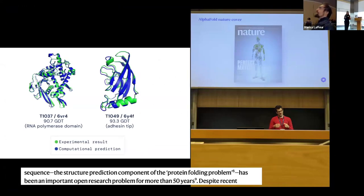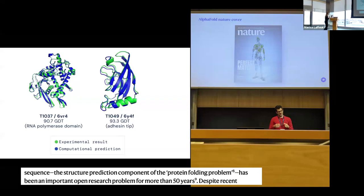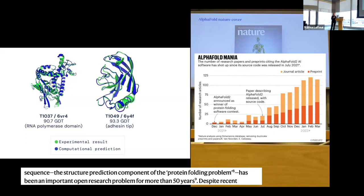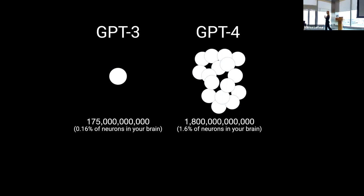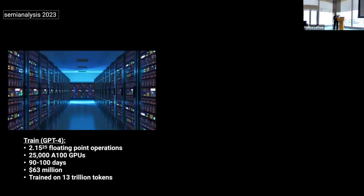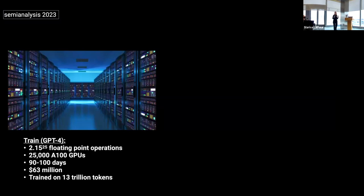Like AlphaFold at CERN: before AlphaFold we knew 10% of how the 20,000 proteins in our bodies fold; after AlphaFold we know over 98%. This is where we want to go in physics. But these models are great because they're simply huge — GPT-3 was 175 billion parameters, GPT-4 is a mixture of 16 experts, roughly 10 orders of magnitude bigger. To even train GPT-4 you need 25,000 A100 GPUs trained for 100 days, $63 million on 13 trillion tokens — like an 800 kilometer long book.